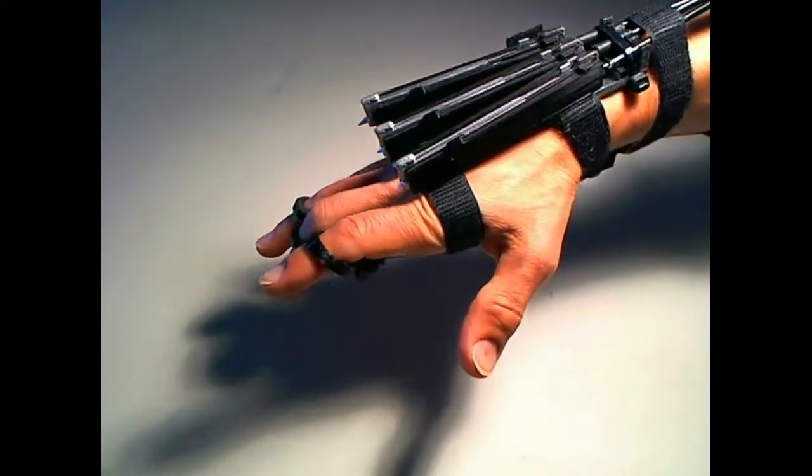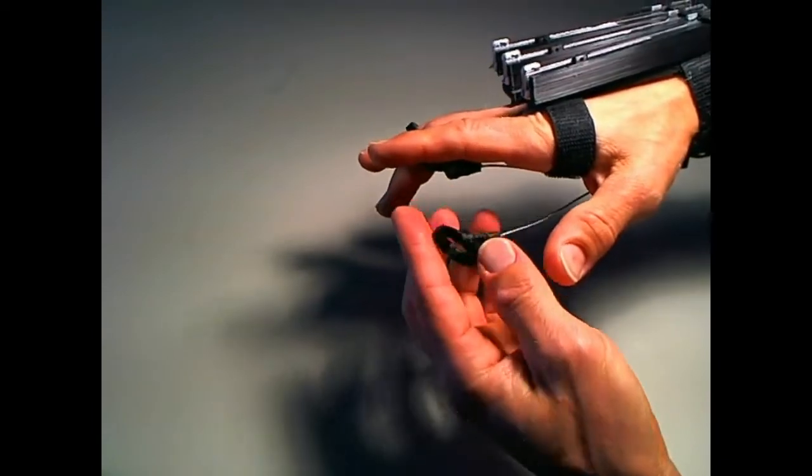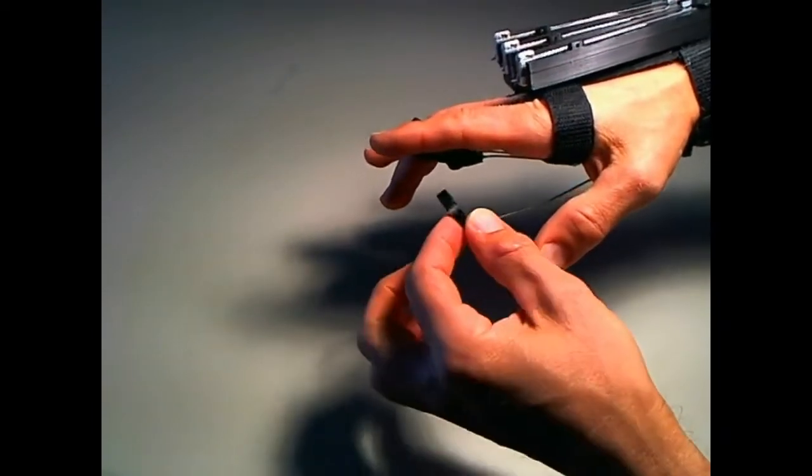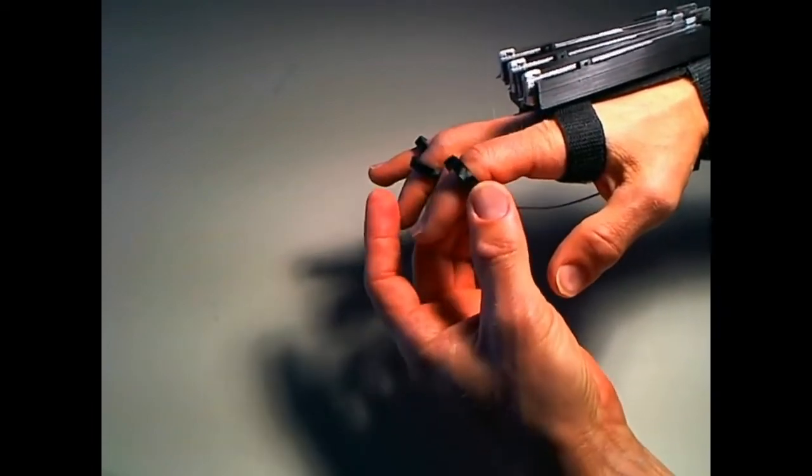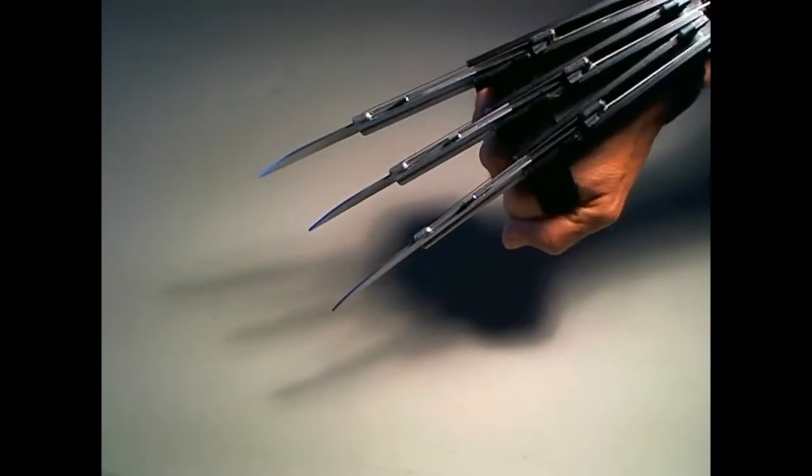Alright guys, here's the final result of my Wolverine Claws 2.0. A bit about it. On the finger rings, it is a modeled hinge system, so that allows for a fluid extension retraction movement for blades whenever I flex my hand.